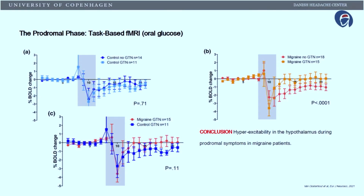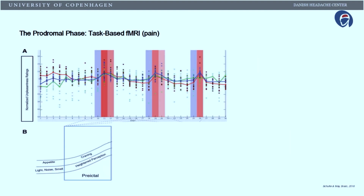Then they looked at migraine patients who got nitroglycerin versus healthy controls who got nitroglycerin, and saw that the migraine patients normalized faster than the healthy controls — so there was a difference in hypothalamic activity. Then they looked at whether this was related to migraine itself or to symptoms in migraine patients. The patients who got nitroglycerin normalized rapidly compared to those without, and this was during the prodromal symptoms — before the patients developed a migraine attack, but after nitroglycerin. The conclusion: the hypothalamus is hyper-excitable during the prodromal symptoms in migraine patients.